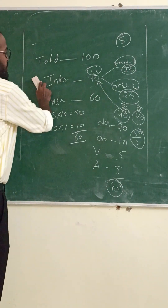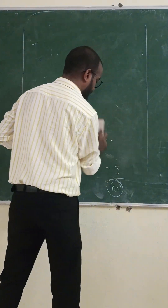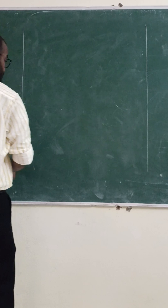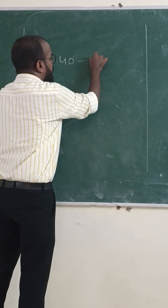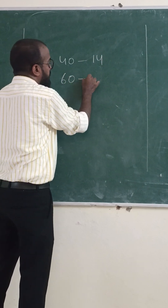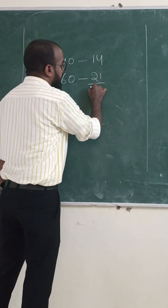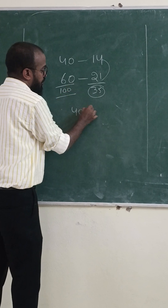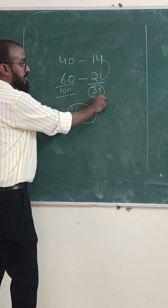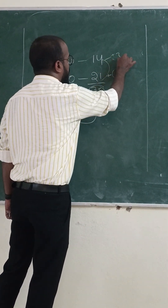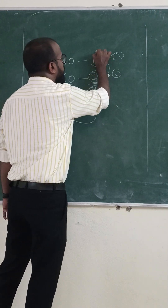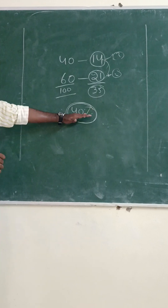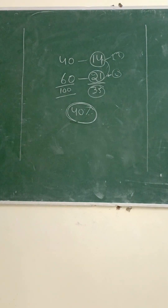Regarding pass marks for internal and external exams: for the internal exam of 40 marks, you need to get a minimum of 14 marks, and for the external exam of 60 marks, you need a minimum of 21 marks. In total, adding both, you must get 40% of the 100 total marks to pass any subject.